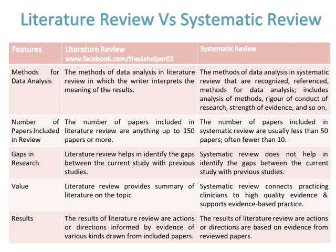A Literature Review helps identify the gaps between the current study and previous studies, while a Systematic Review does not help identify those gaps. A Literature Review provides a summary of literature on the topic, while a Systematic Review connects practising clinicians to high-quality evidence and supports evidence-based practice. The results of a Literature Review are actions or directions informed by evidence of various kinds drawn from included papers, while the results of a Systematic Review are actions or directions based on evidence from reviewed papers.